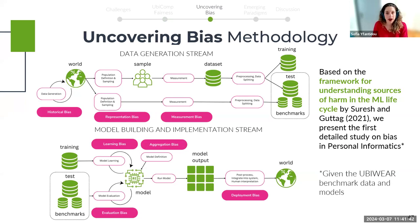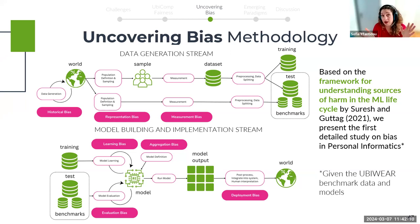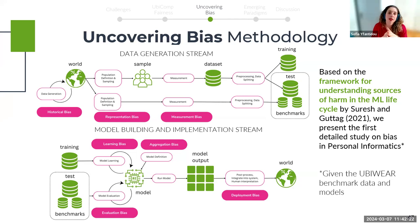Going from theory to practice, we wanted to showcase how a developer could integrate our recommendations in a ubicomp pipeline. We adopted the widely accepted framework for understanding sources of harm in the machine learning lifecycle by Suresh and Guttag, and applied it to the UbiWare benchmark. The framework splits the machine learning lifecycle into two streams: the data generation stream, which may be harmed by historical, representation, and measurement biases; and the model building and implementation stream, which may be harmed by learning, aggregation, evaluation, and deployment biases.